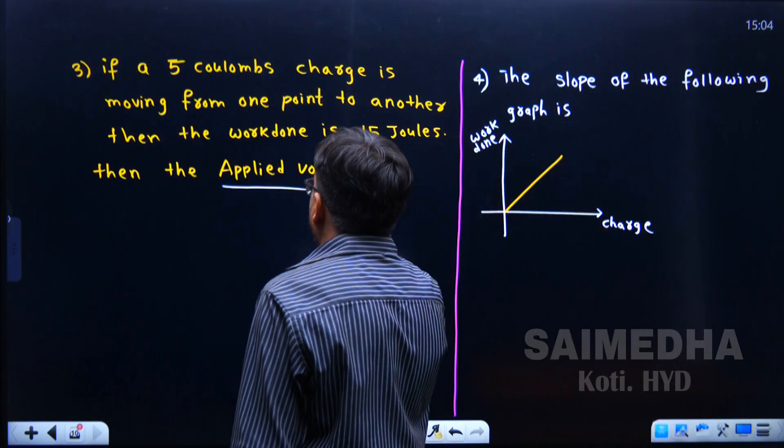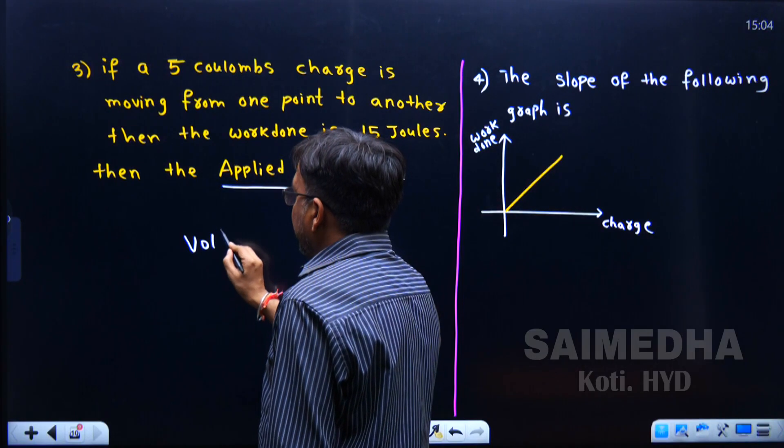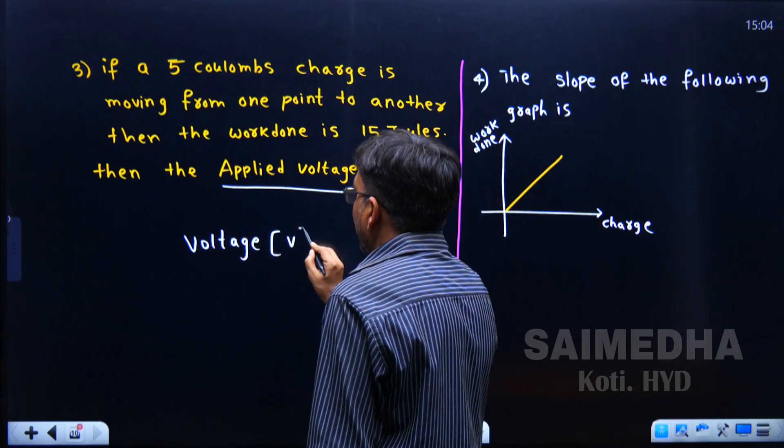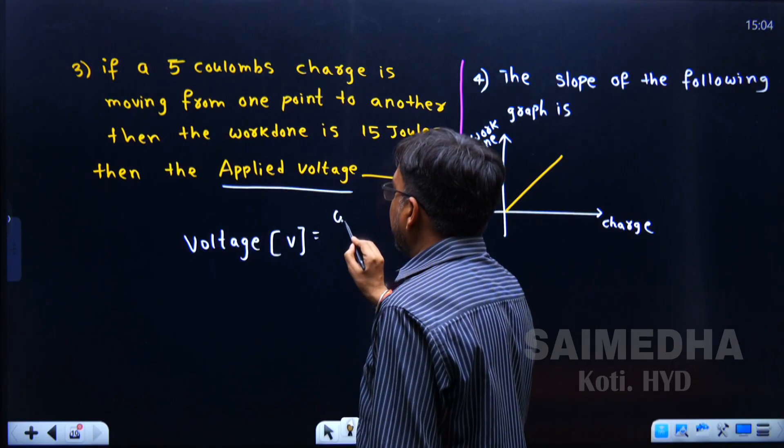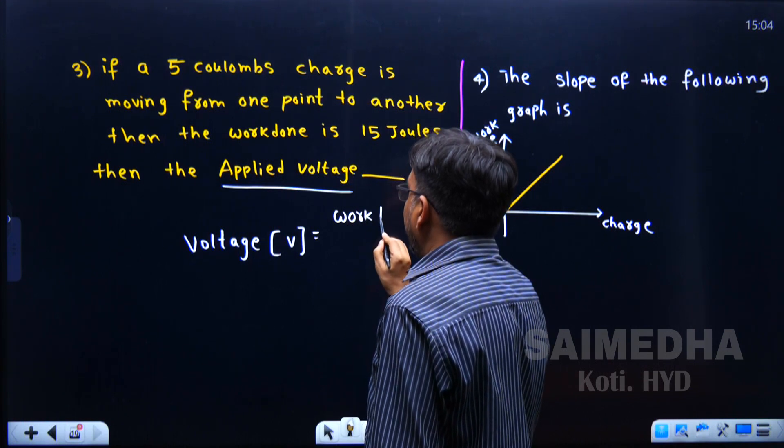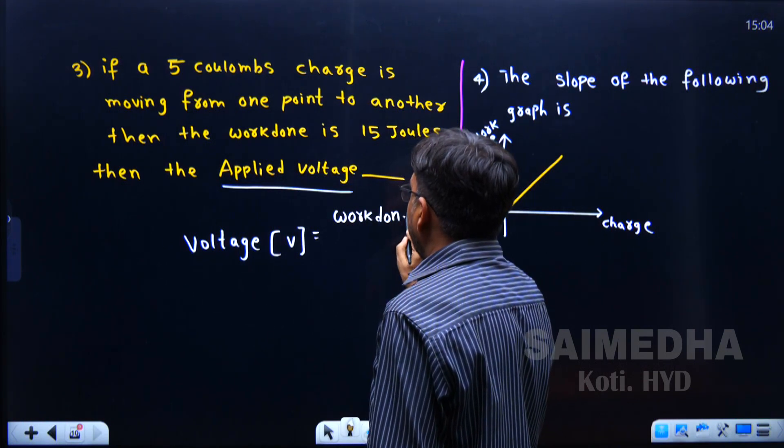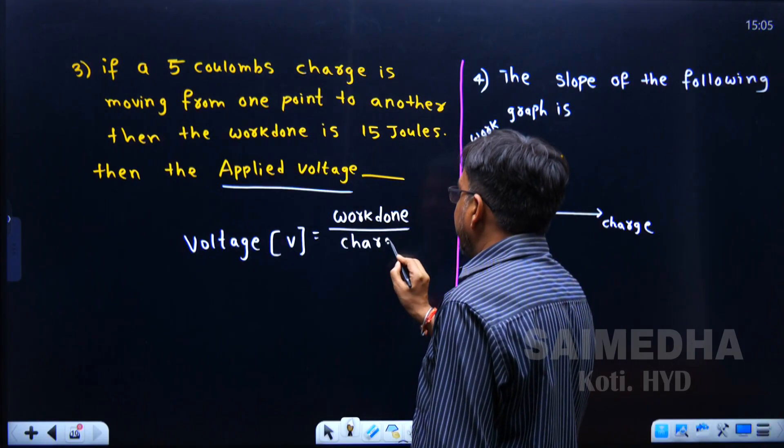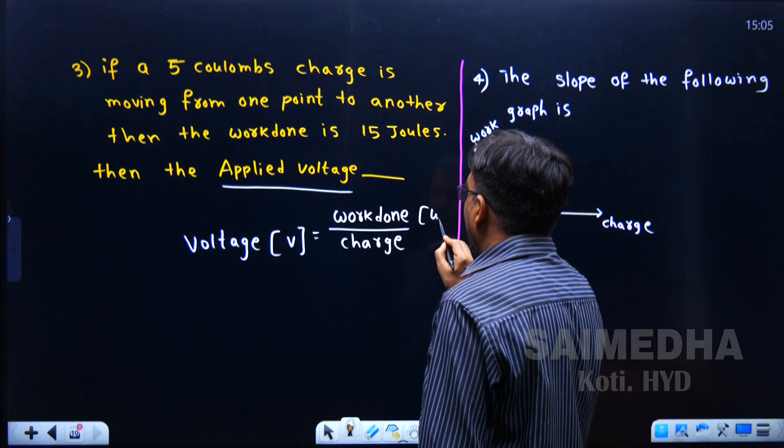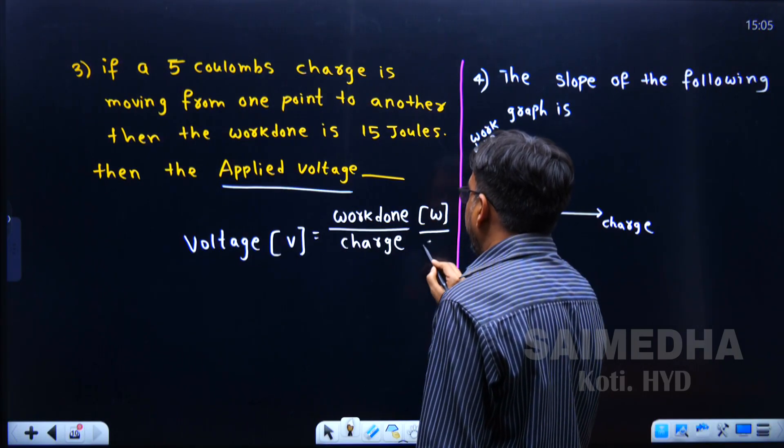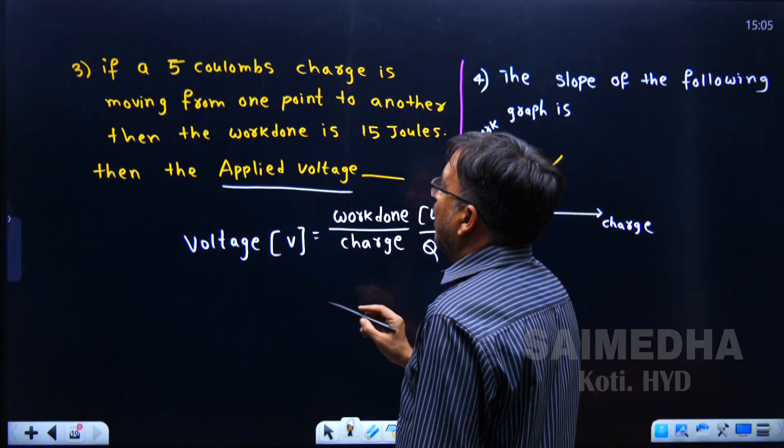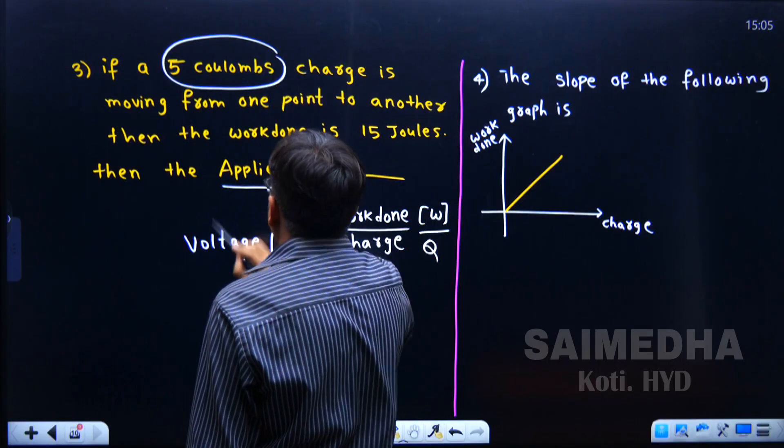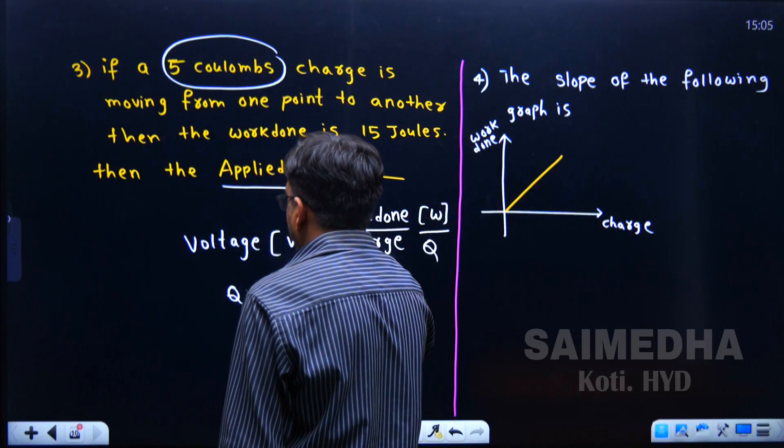To find applied voltage, we use the formula voltage V equals work done by charge, V equals W by Q. The charge value is given as how much? 5 coulombs. Q equals 5 coulombs.